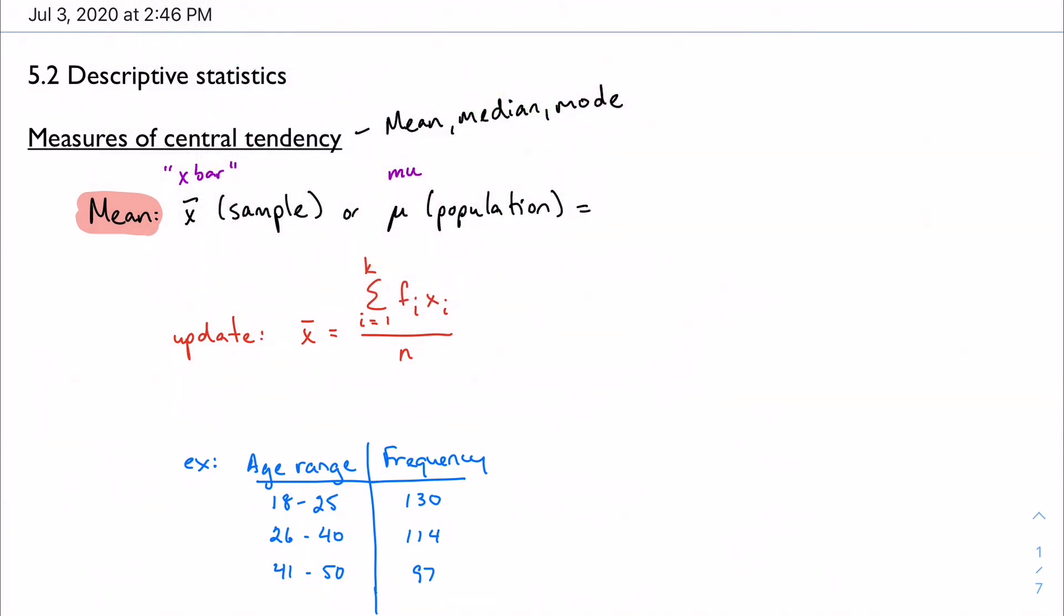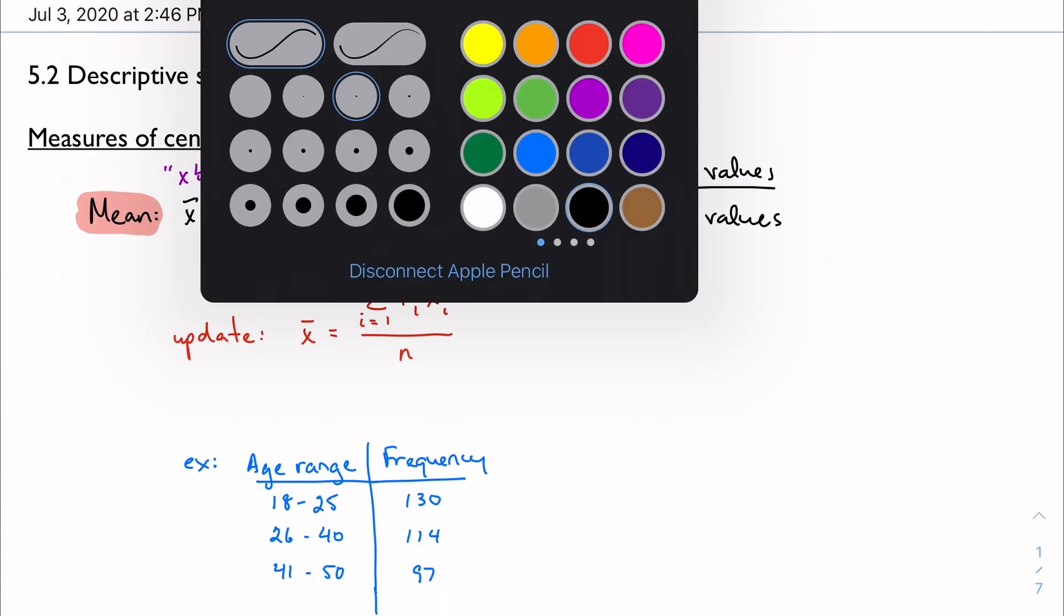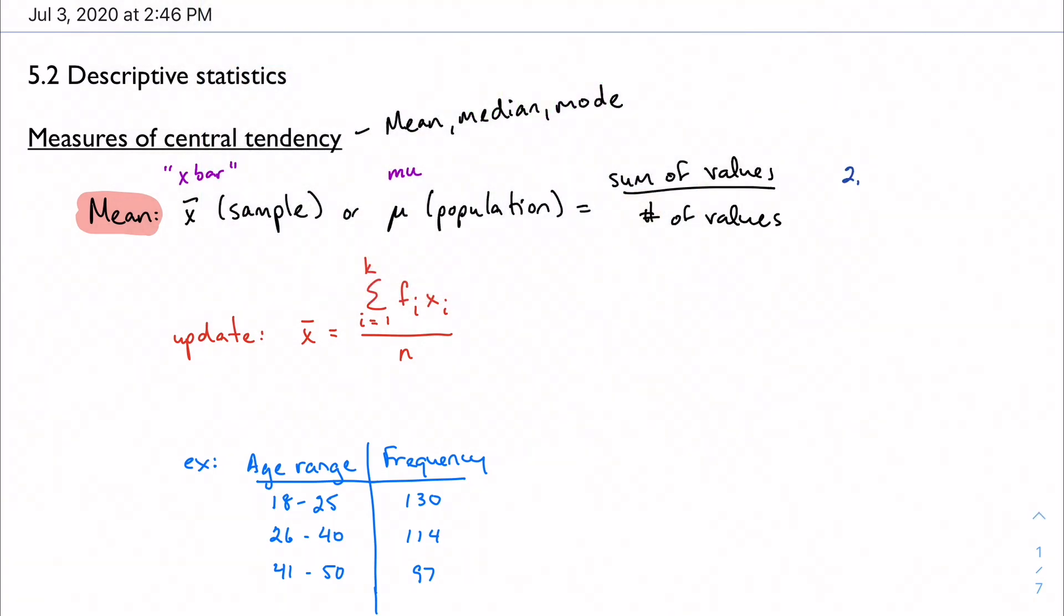Well, regardless, it's calculated the same way. You probably remember that we're going to take the sum of the values in our data set and divide by the number of values in our data set. For example, if I had numbers like 2, 4, 6, and 7, well, the average of that would be whatever 19 divided by 4 is. So it's going to be 4 and 3 quarters.